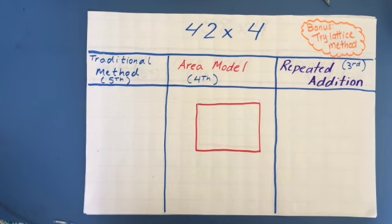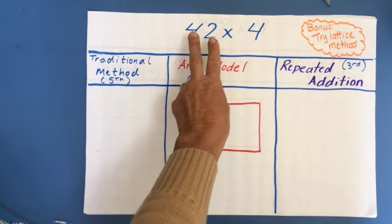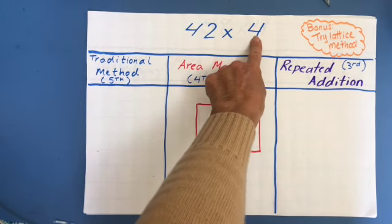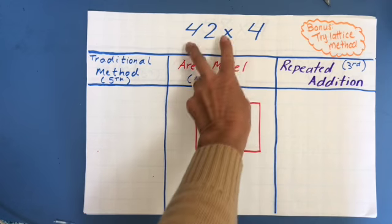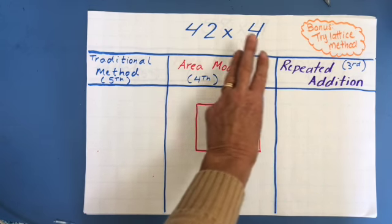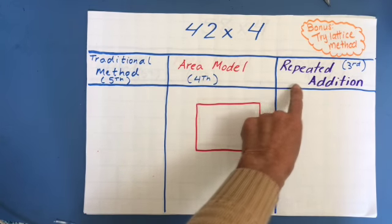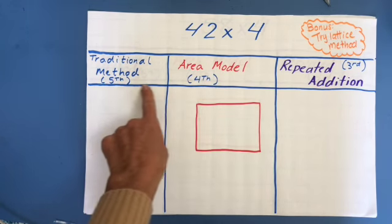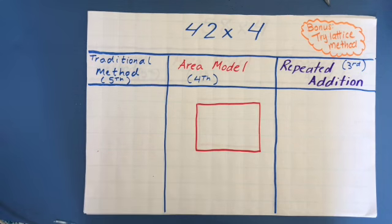This is going to show you how to do two-by-one-digit multiplication problems. I'm going to show you three methods: repeated addition, area model, and traditional method.